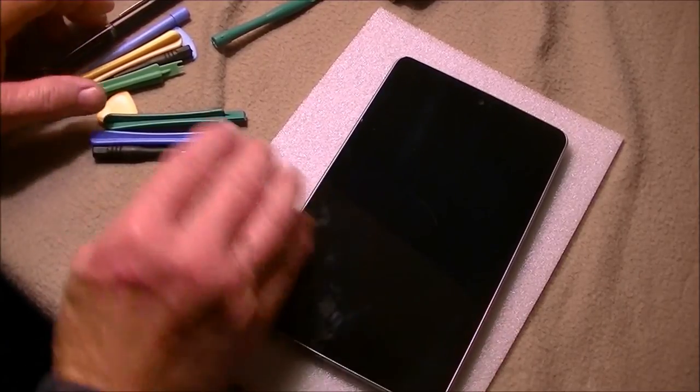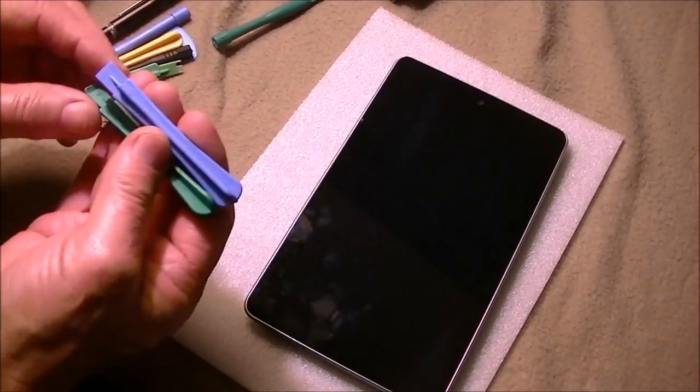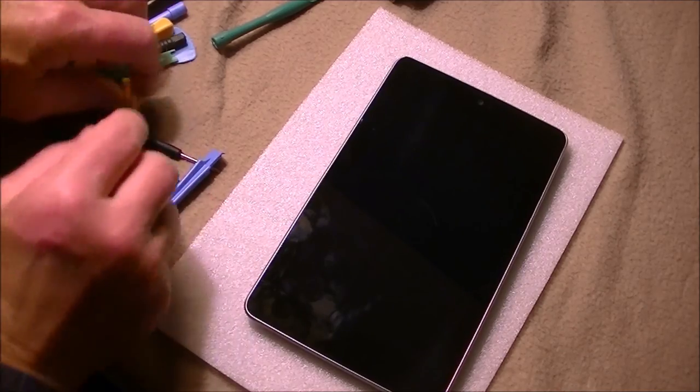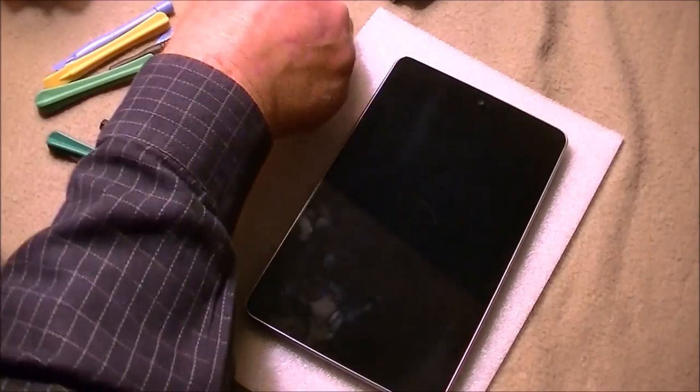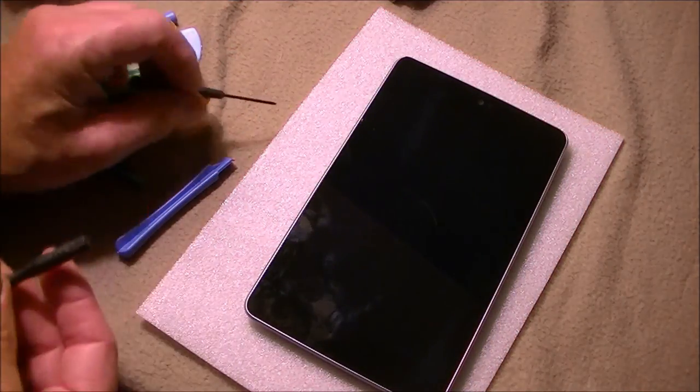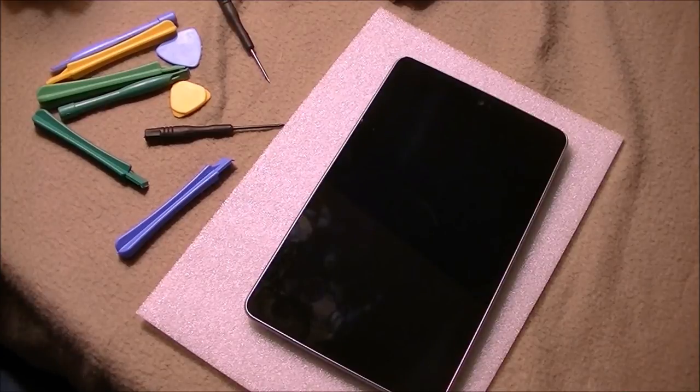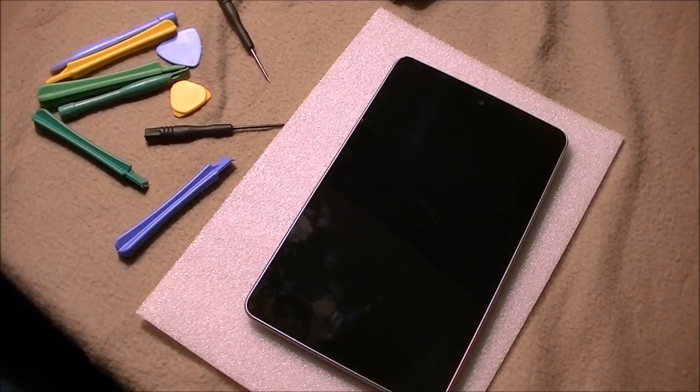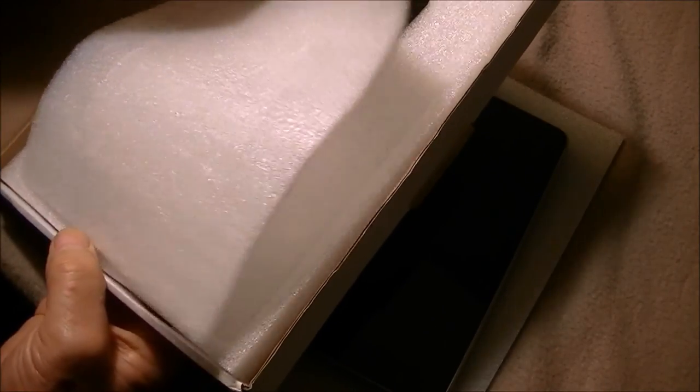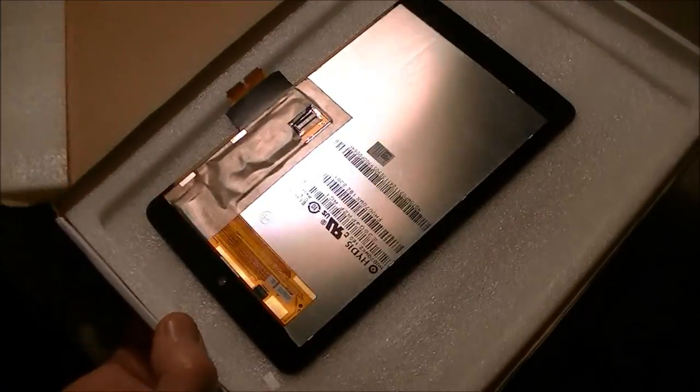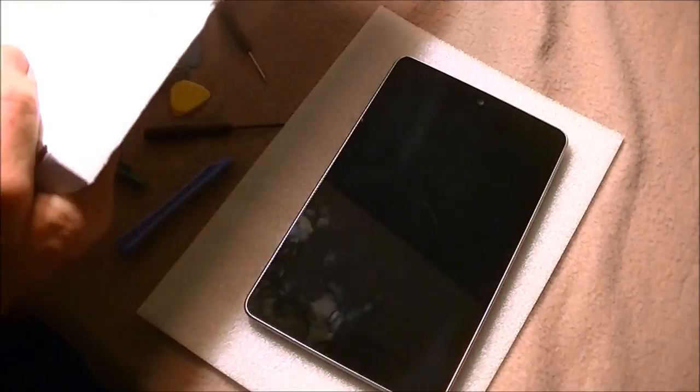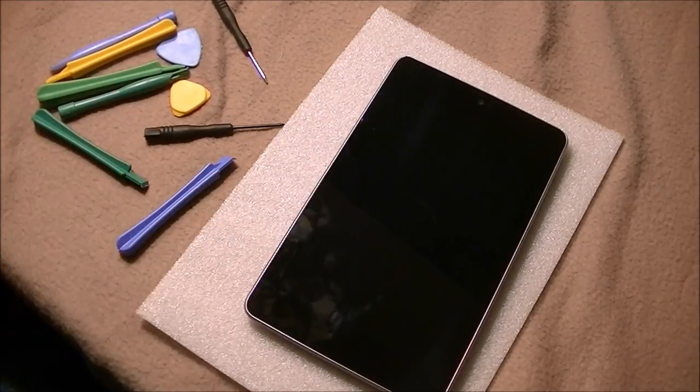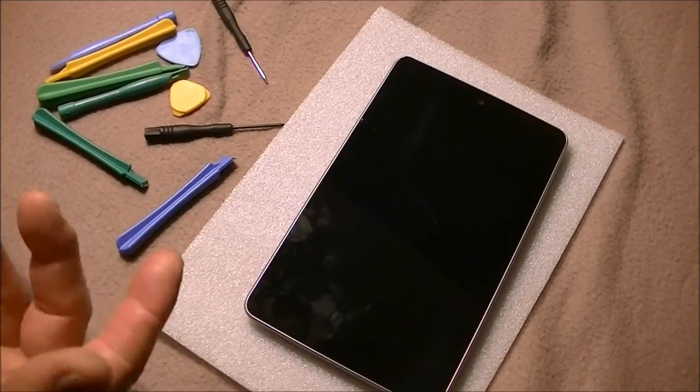What you're going to need: these are called spudgers, just little tools to pry around, guitar picks, and a couple of screwdrivers, a Phillips screwdriver particularly. You'll also need a heat gun of some sort, or you can leave your device out in the sun for about 30 minutes to heat it up. You'll need a replacement glass and digitizer assembly. This will cost you about $70 on Amazon, but you're going to have to order it. Even though some suppliers say they're local, mine came from China. Takes about four weeks, so just be prepared.